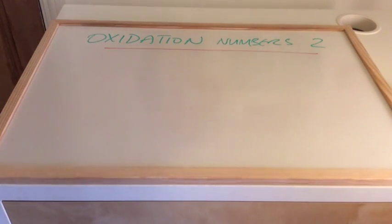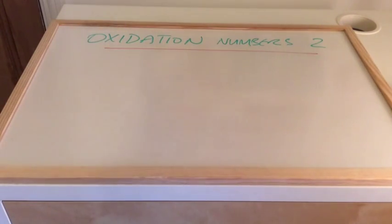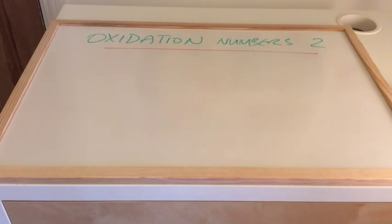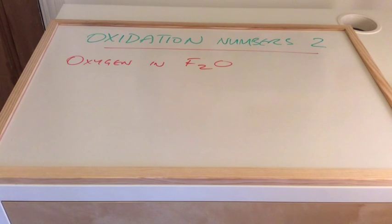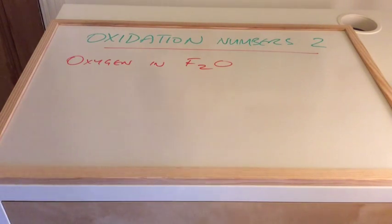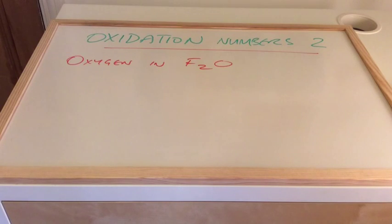In this video I'm going to take another look at oxidation numbers, but I'm going to use some slightly more complicated examples than the first video. So we'll start with this one: what's the oxidation number of oxygen in F₂O?